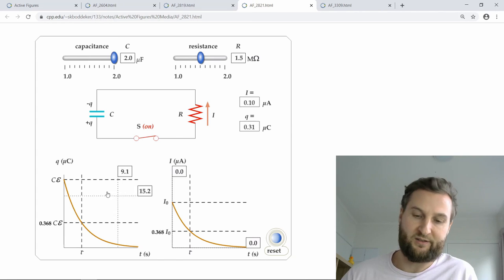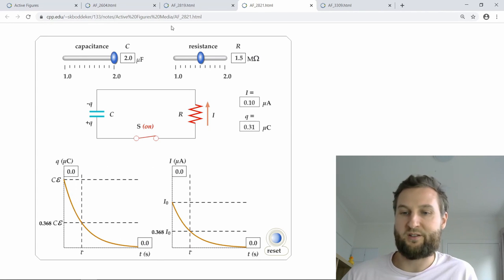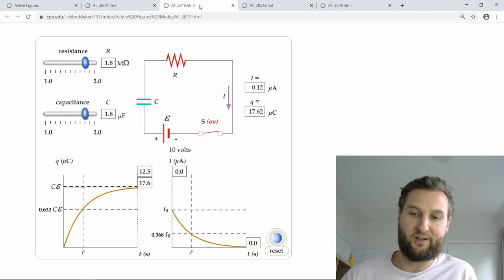So the current also doesn't remain constant, right? If charge doesn't remain constant, current also does not remain constant.